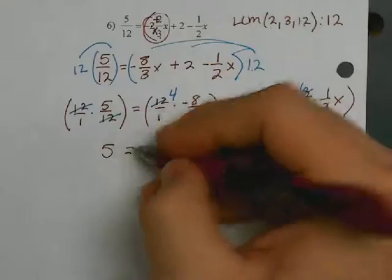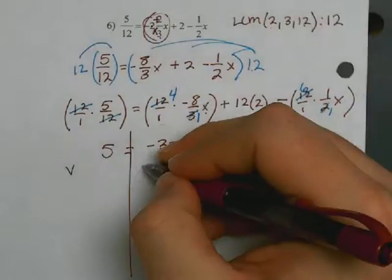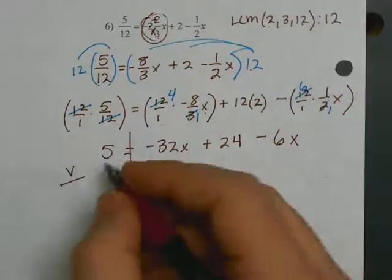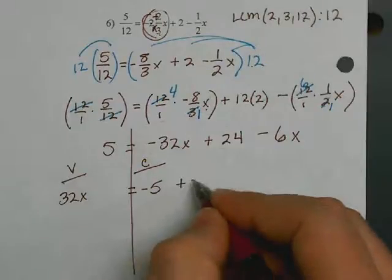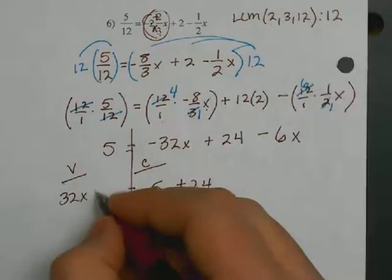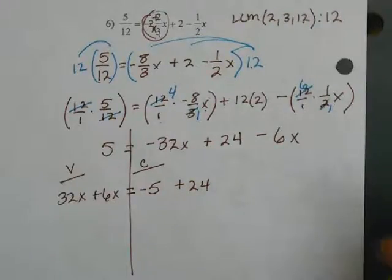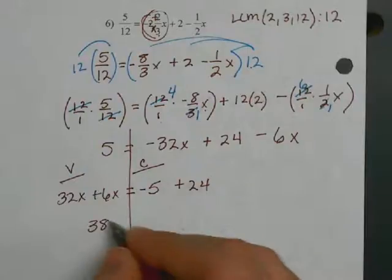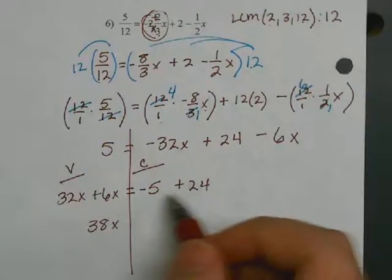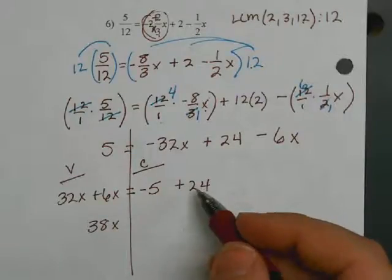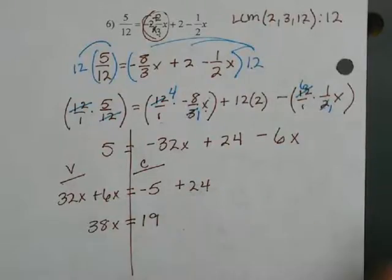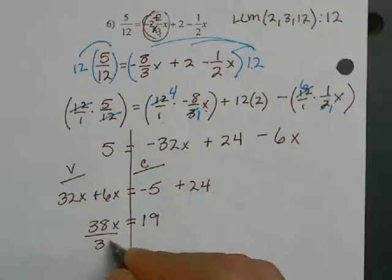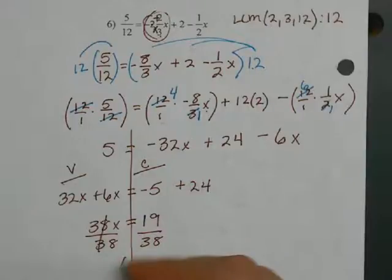Now separate variables and constants. Five is a constant — move it across, changing the sign. The variable terms move across changing sign. Twenty-four is a constant — drop it in place. Combining: negative 32x and negative 6x gives negative 38x. Negative 5 plus 24 is positive 19. Dividing both sides by negative 38, x equals 19 divided by 38, which is one-half.